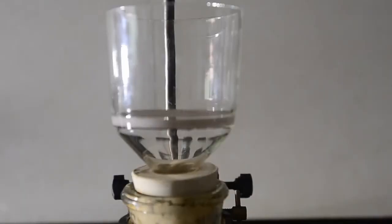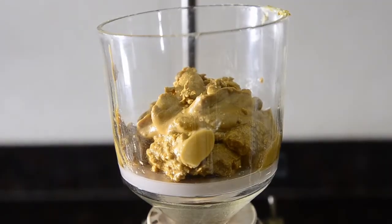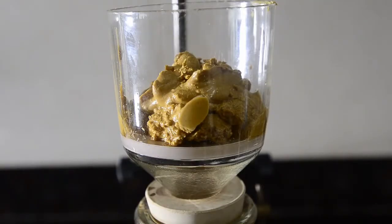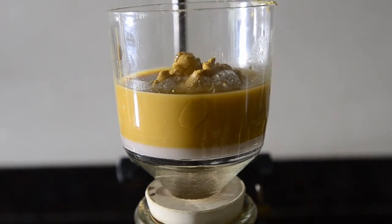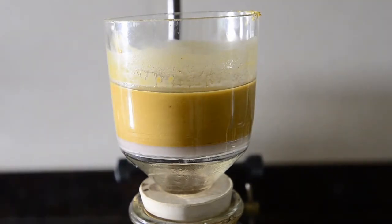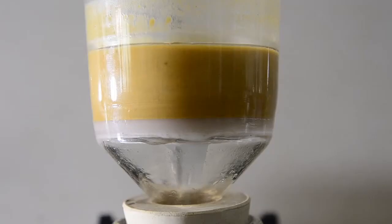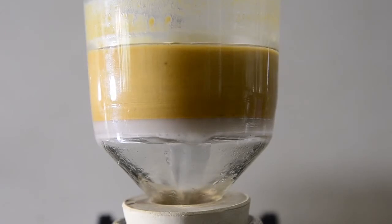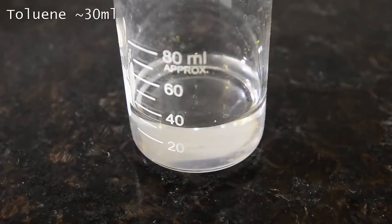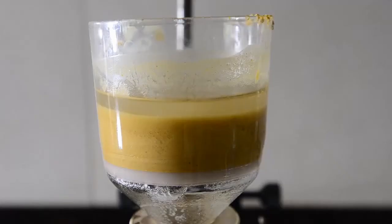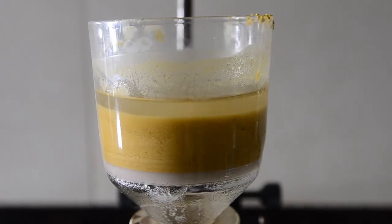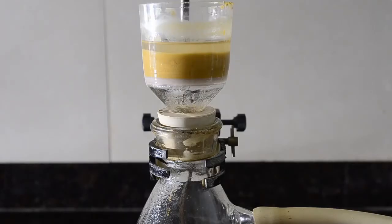Now set up for vacuum filtration. Transfer the contents of the flask into the filter. And then use a little toluene to wash out the reaction flask and add to the filter. Give the mixture a stir to make sure it's homogenous. And then filter the solids until you have a semi-dry paste. Now prepare around 30 mls of toluene to wash the solids. Mix up well as before. And then filter again. This time keep the pump running and break up the paste occasionally to dry it as much as possible.